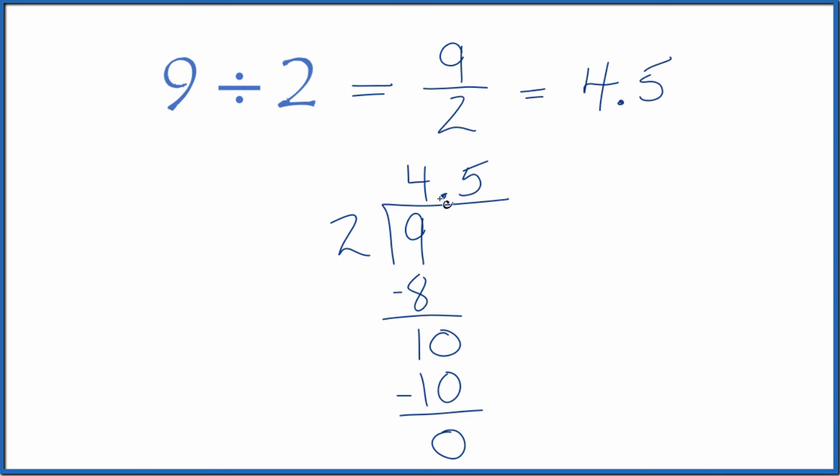So 9 divided by 2, that equals 4.5. That's what we found up here. This is Dr. B dividing 9 by 2. You get the fraction 9 over 2, or the number 4.5. Thanks for watching.